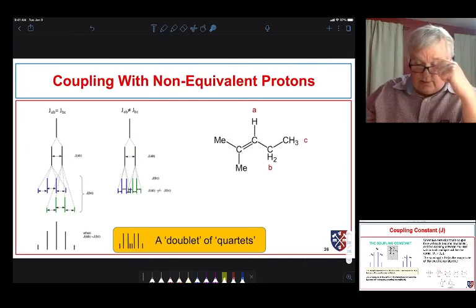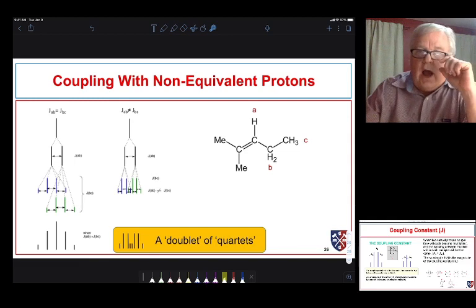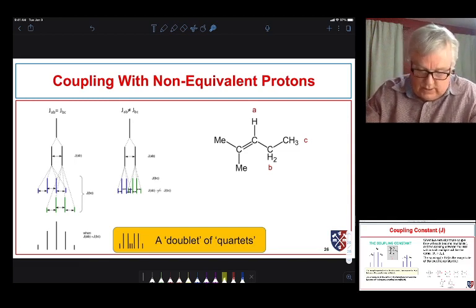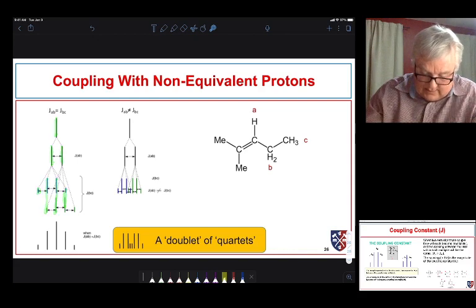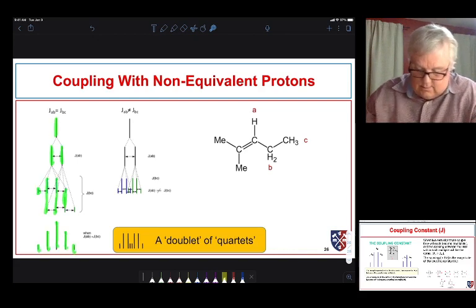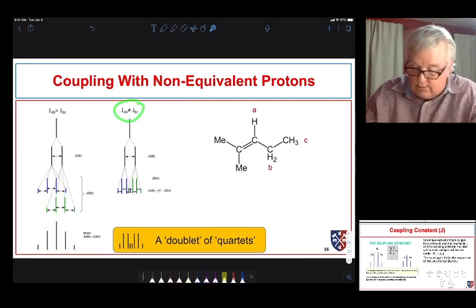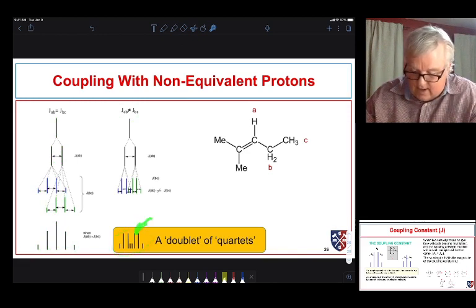We can do our splitting patterns and see why we see this nice, simple pattern when JAB equals JBC. We can use our splitting trees. We can split J into AB and then we split it, JBC, and that's going to be a quartet. Notice now that these overlap as we split these through and we see a nice pentet because of the overlap. If they're not equal, it can get very complex and we can actually see that this is a doublet of quartets but it's kind of complicated.